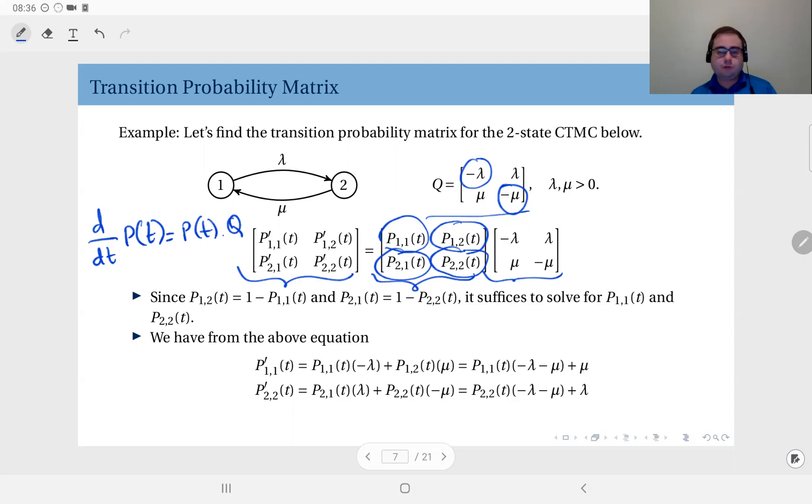For instance, if I solve P11(t), I can immediately obtain P12(t) because they add up to one, simple as that. So I don't need to solve P12(t) separately. Similarly with P21 and P22(t), it suffices that you solve just one.